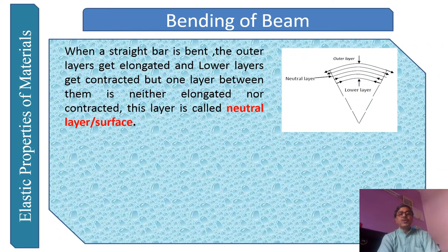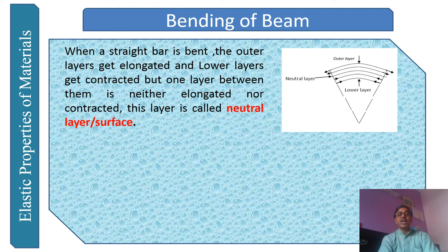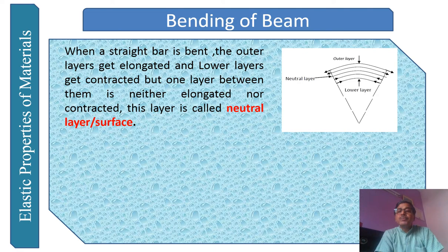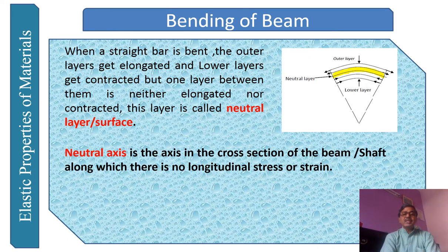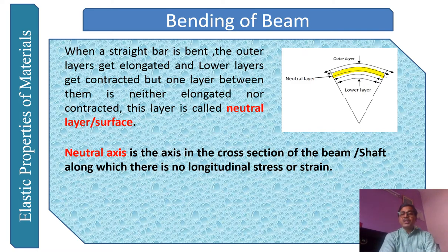When a straight beam is bent, the outer layer gets elongated and the lower layer gets contracted. One layer between them is neither elongated nor contracted — that layer is called the neutral axis. The neutral axis is the axis in the cross-section of the beam along which there is no longitudinal stress or strain.